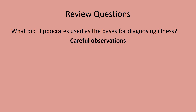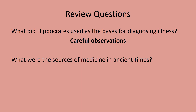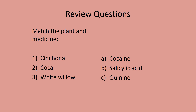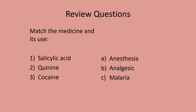If you said careful observation, you'd be correct. What were the sources of medicine in ancient times? There are three: plants, animals, and minerals. Match the plant to the medication: cinchona gives quinine; coca gives cocaine; white willow gives salicylic acid — or more precisely, acetylsalicylic acid, which is ASA, aspirin. Match the medicine to its use: salicylic acid is for pain relief — the term is analgesic, from 'ana' meaning without and 'algesia' meaning pain. Quinine is for prevention of malaria, and cocaine is a local anesthetic.